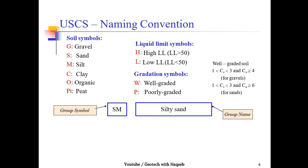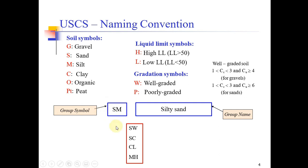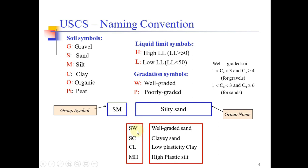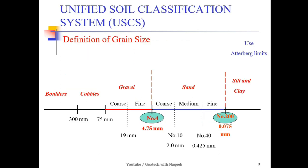A group name such as 'silty sand' is expressed with a group symbol — for example, SM. Other examples: SW stands for well graded sand, SC for sandy clay, CL for clay with low plasticity, and ML for silt with low plasticity. Similarly, CH and MH represent high plasticity clay and silt.